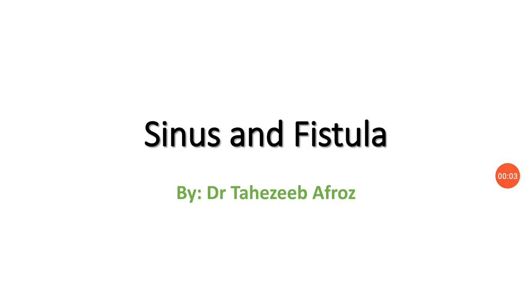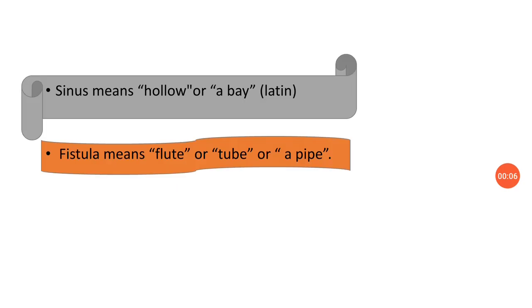Today we are going to discuss sinus and fistula. The literal meaning of sinus is hollow or a bay, derived from Latin. Similarly, the literal meaning of fistula is fluid-like a tube or a pipe.